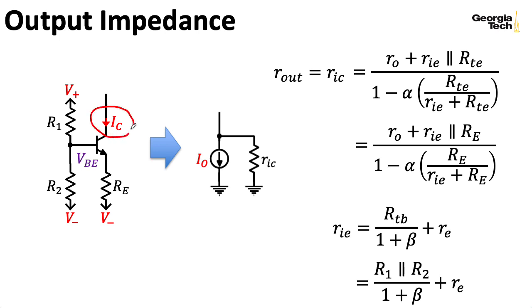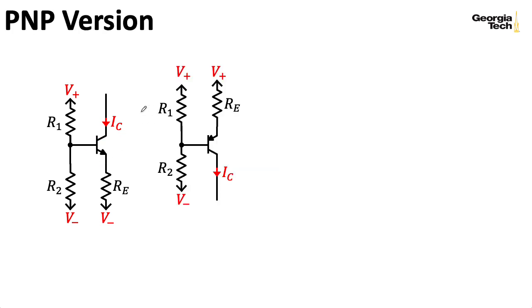So this is a current sink that uses an NPN transistor. We can, of course, flip everything upside down and create a PNP version of this that acts as a current source. And all of the formulas still apply. You just reverse the current arrows. And instead of VBE, you use VEB.